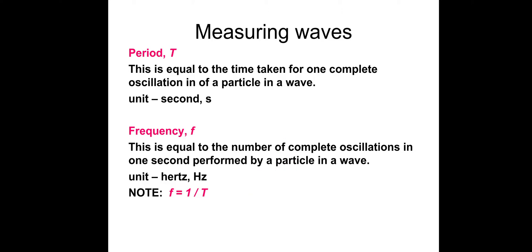Period T is equal to the time taken for one complete oscillation of a single particle on a wave, measured in seconds. Frequency is equal to the number of complete oscillations in one second, measured in hertz. The frequency equation is f equals one divided by the time period.